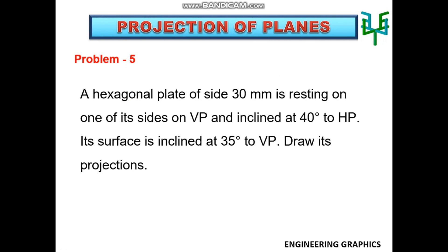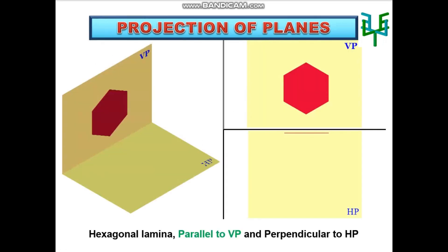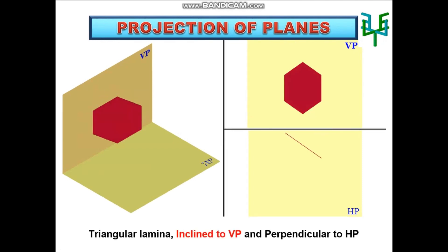Initially, the hexagonal lamina is parallel to VP and one side is perpendicular to HP. Then the lamina is tilted to make it inclined to VP. Then the edge is tilted to make it inclined to HP.